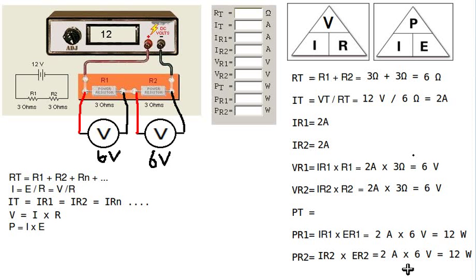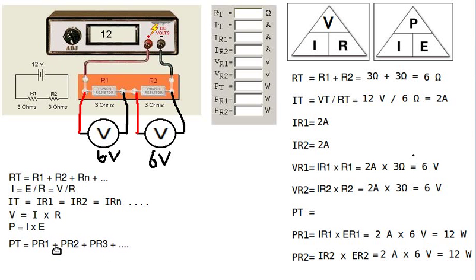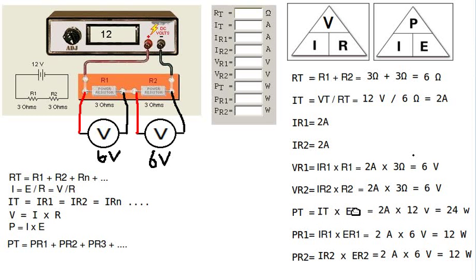There are two ways to calculate the total power. One way is simply to add the individual powers together: 12 watts plus 12 watts equals 24 watts. That is a characteristic of any circuit — the total power is the sum of the individual powers. We can also verify this by multiplying total current times total voltage: 2 amperes times 12 volts also gives 24 watts. Notice that 12 plus 12 equals 24, so that checks out.